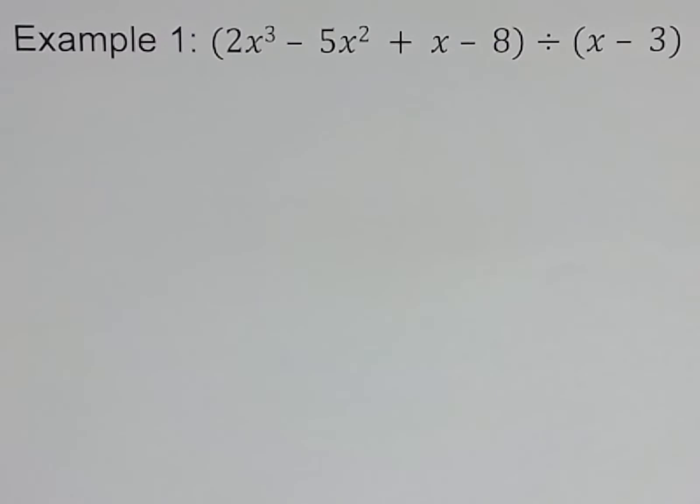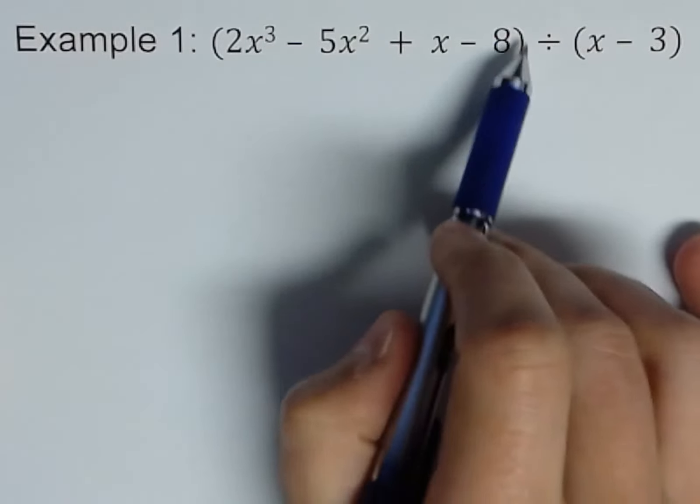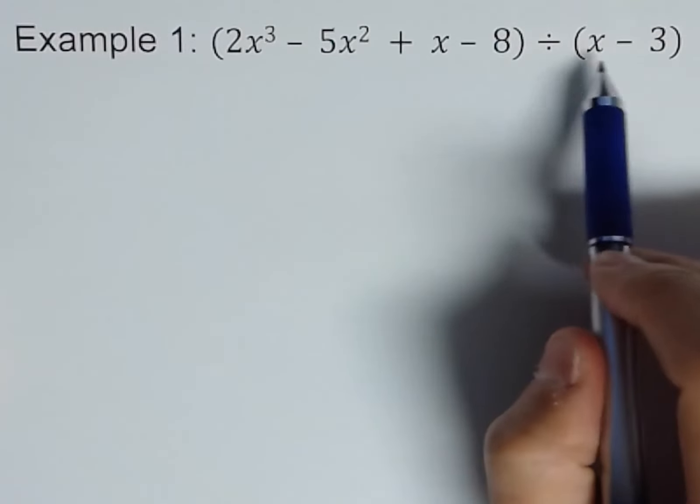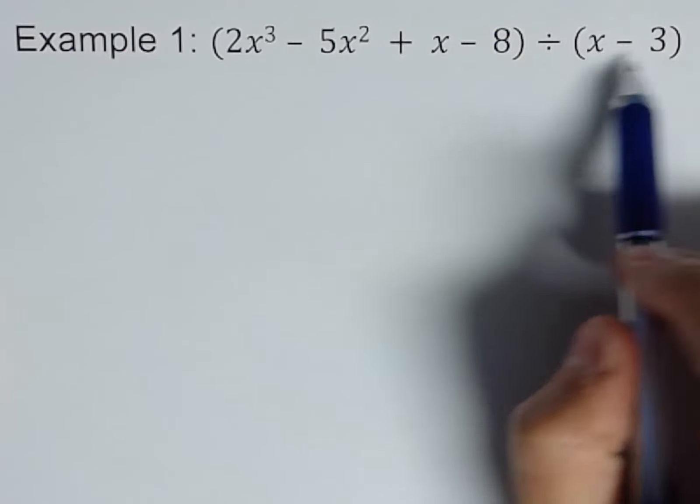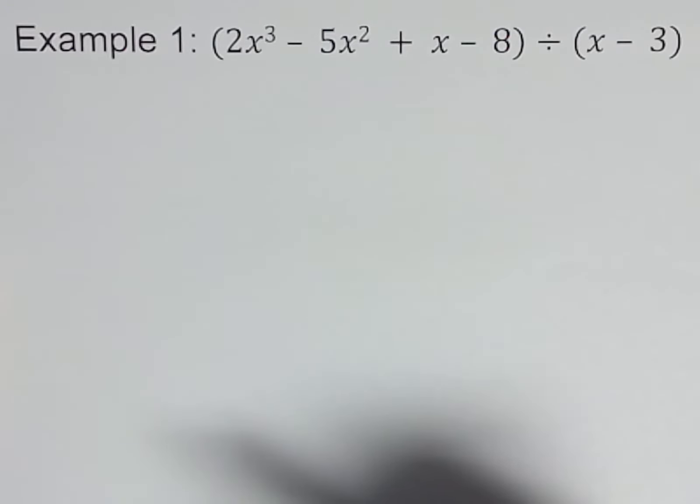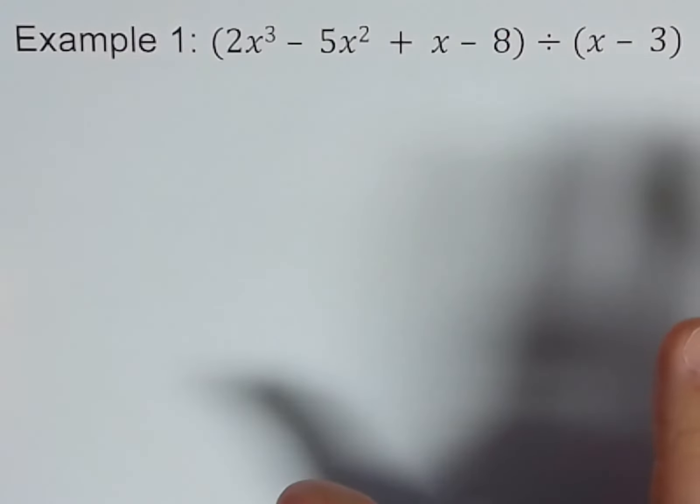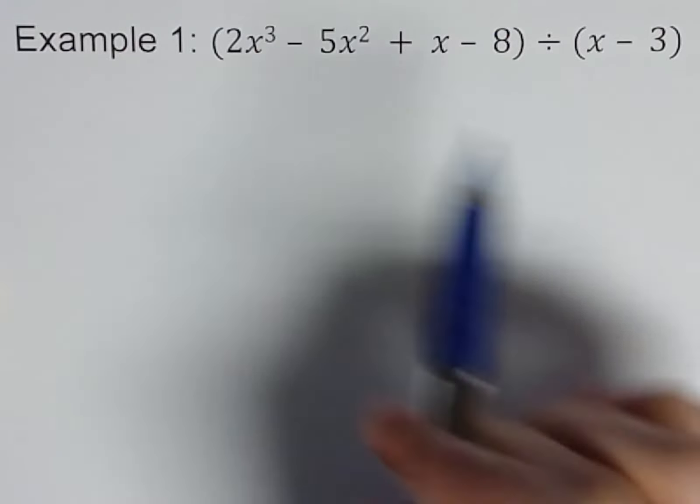Okay, we are working with long division of polynomials. We've got this polynomial and we want to divide it by this little binomial here, x minus 3. A couple things I mentioned on the previous slide: make sure your polynomial's in descending order.